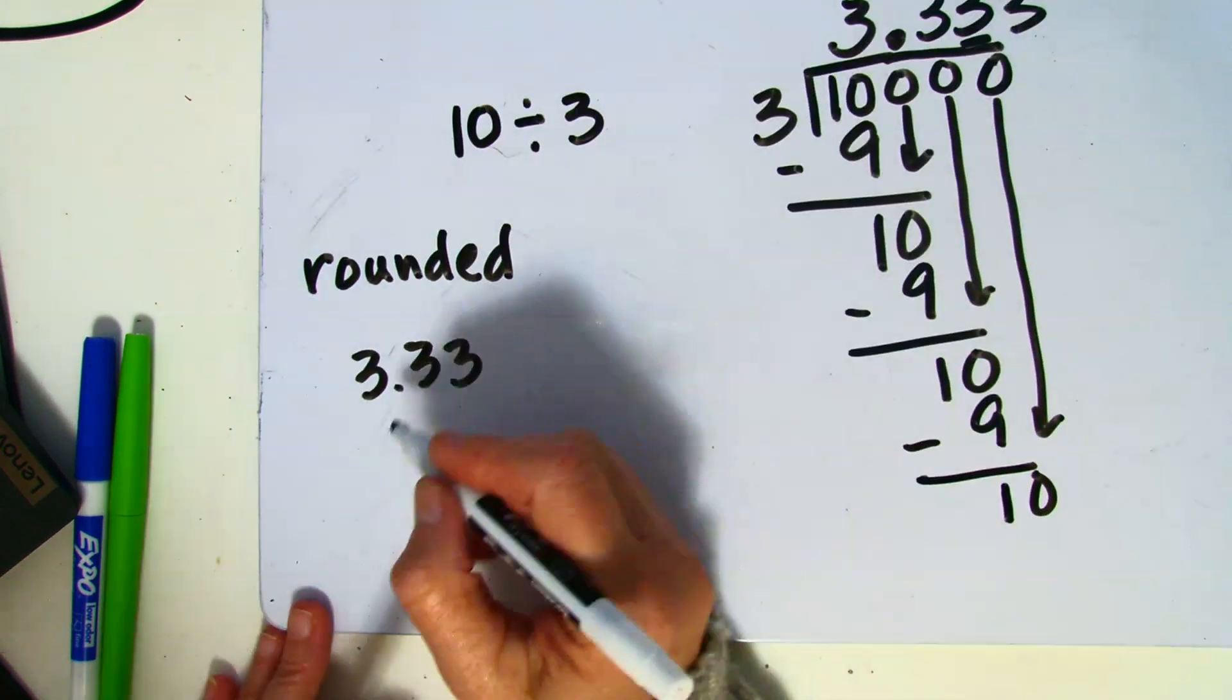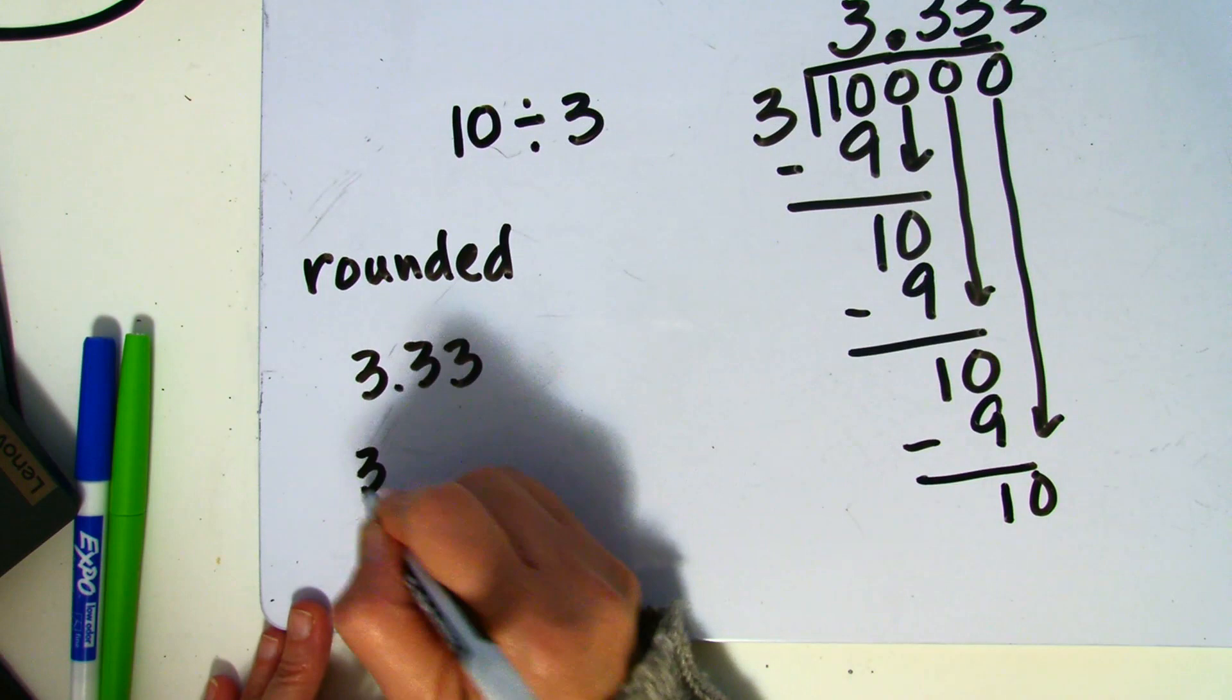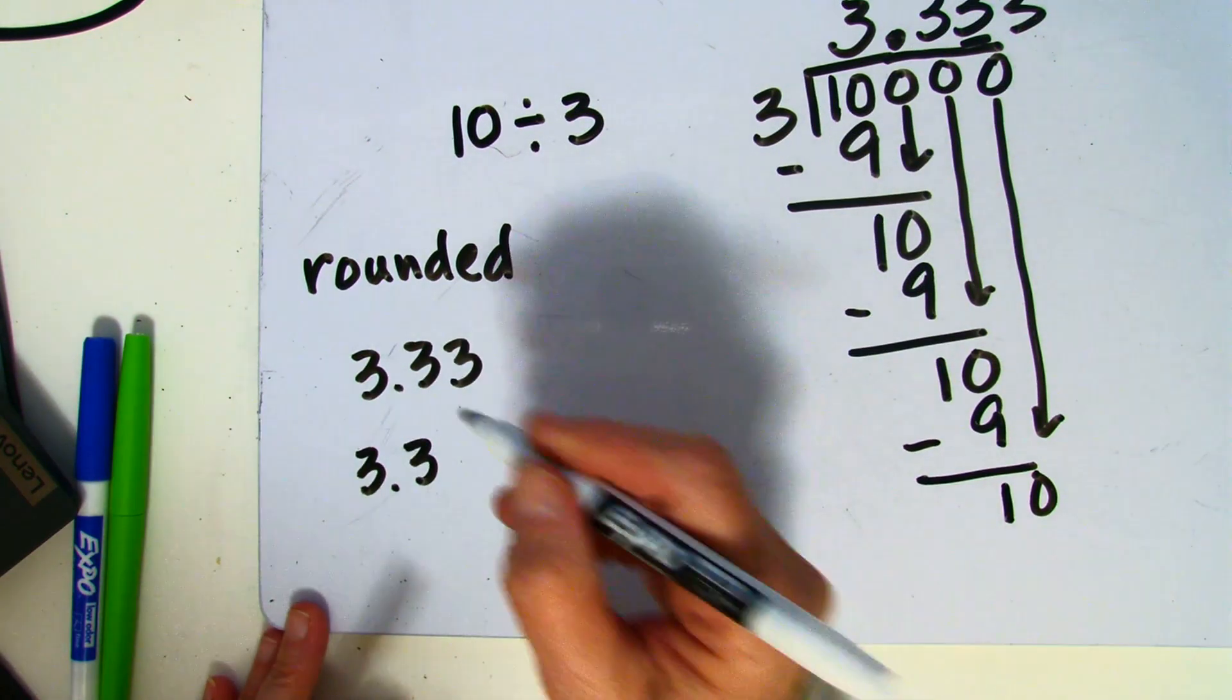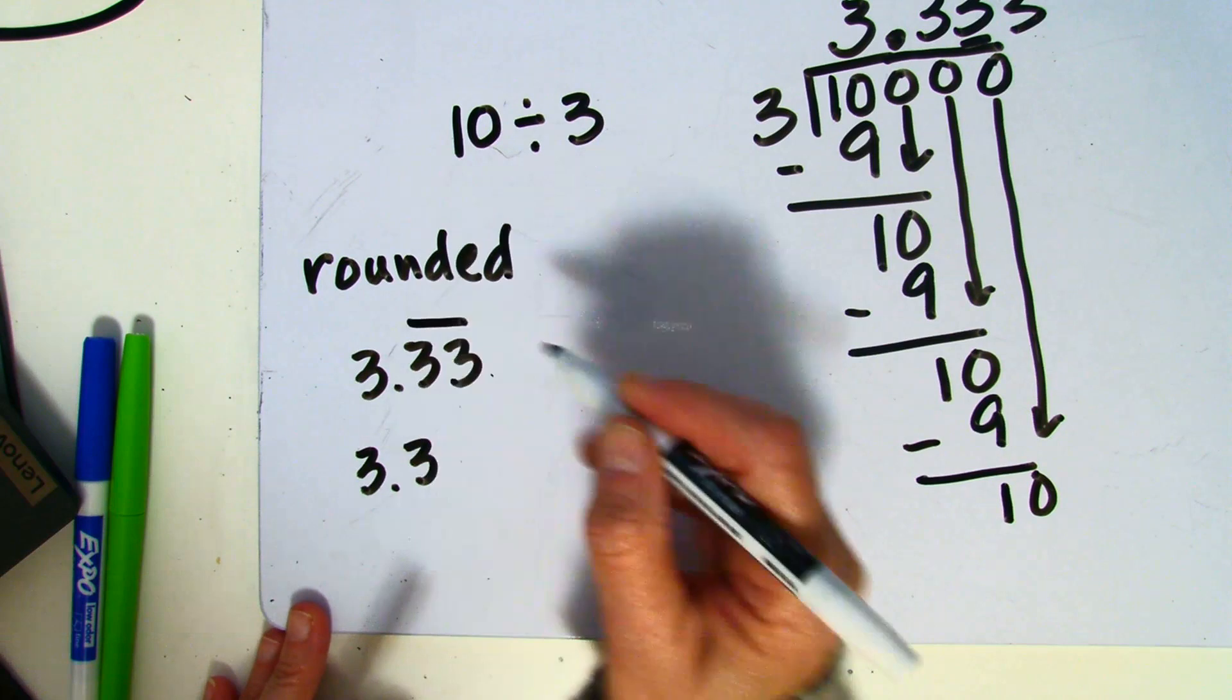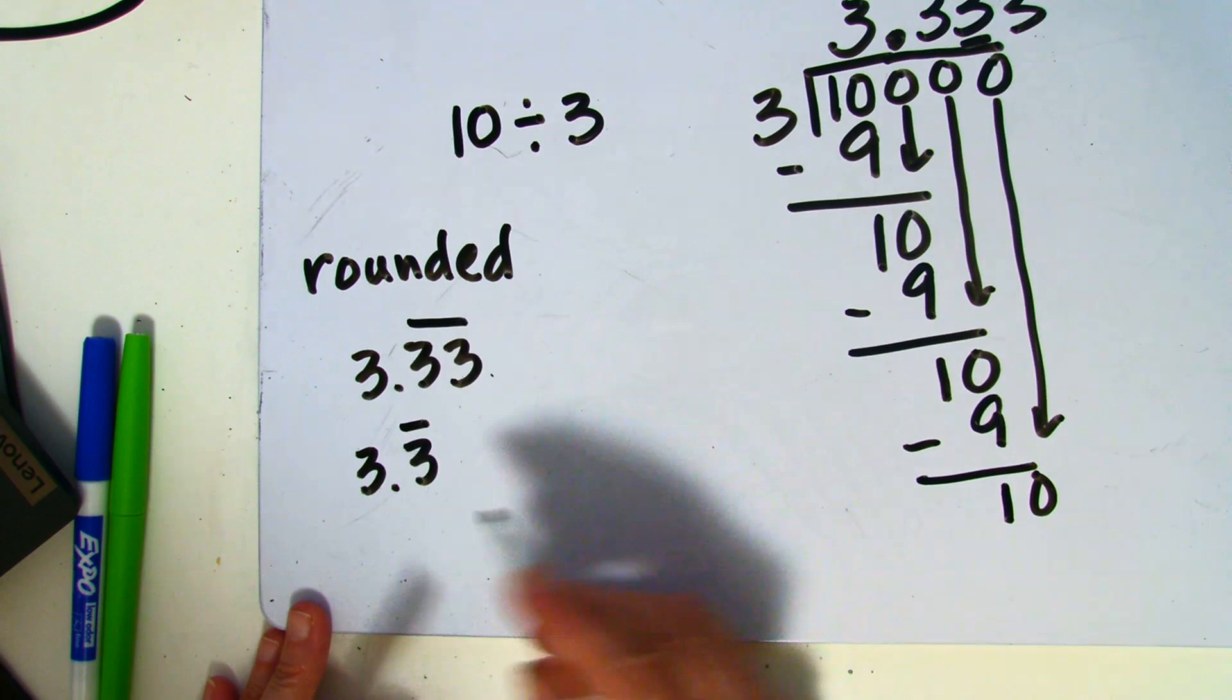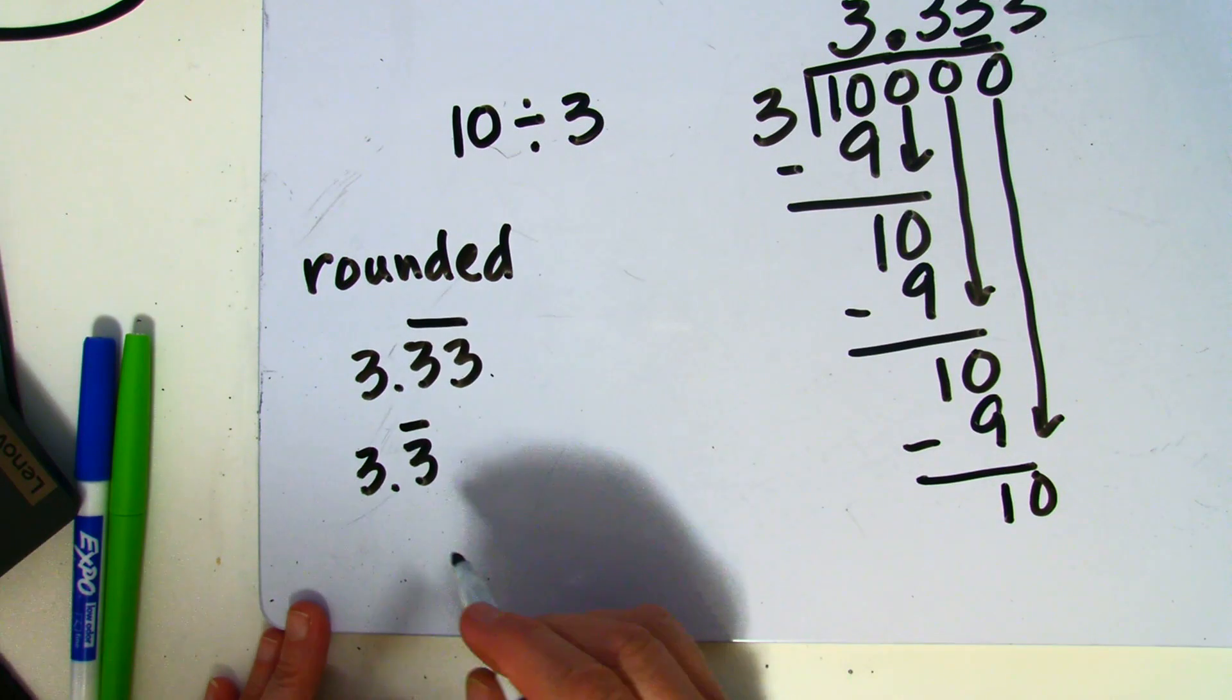If I wanted to round to the nearest tenths, it would be 3 and 3 tenths. And if you have it like this, that means those are going to repeat. Or you could write it like this, 0.3̄.